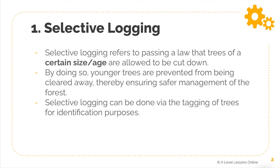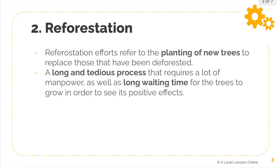The first strategy is selective logging. Logging is a cause — excessive logging is a cause of deforestation. So we can pursue selective logging to try and prevent excessive logging from taking place. We can pass a law or regulation whereby only certain trees of a certain size or age are allowed to be cut down. Younger trees are prevented from being cleared, ensuring safer management of the entire forest. For example, only trees past 100 years old may be chopped. This is done via the tagging of trees to identify their type and age.